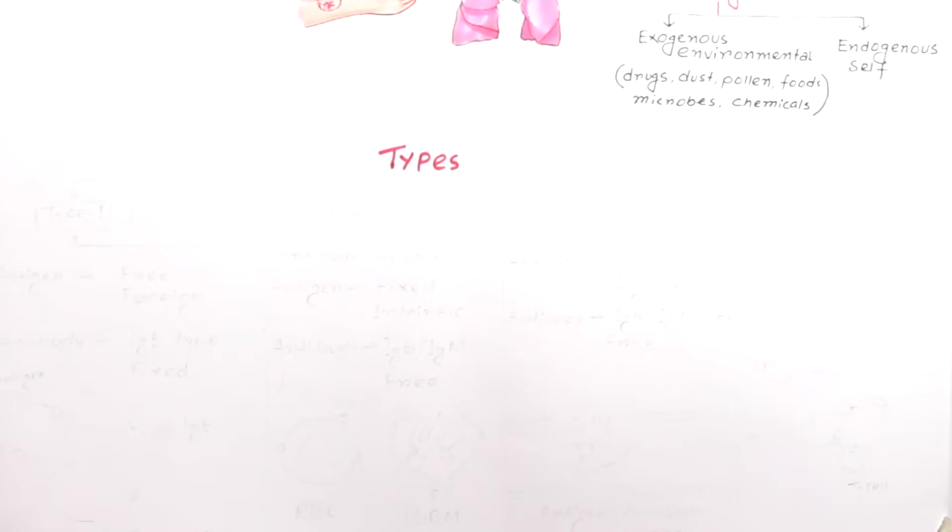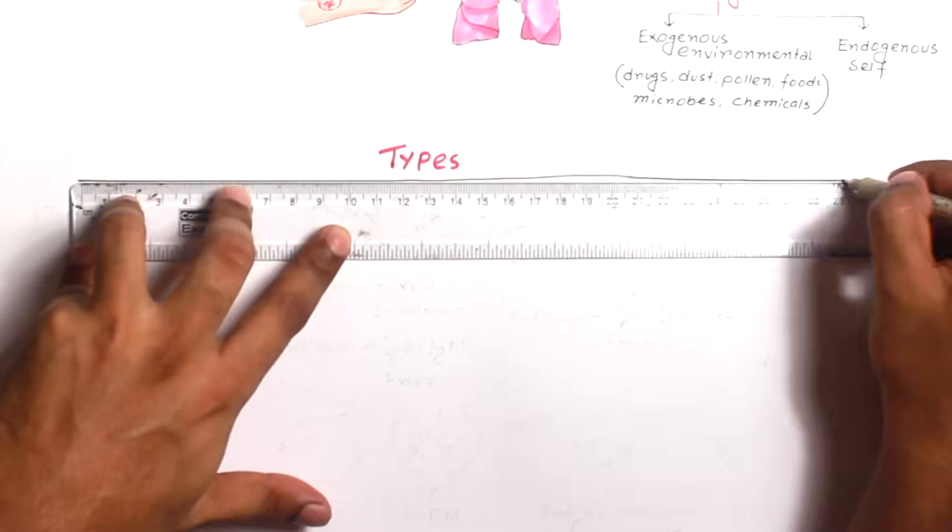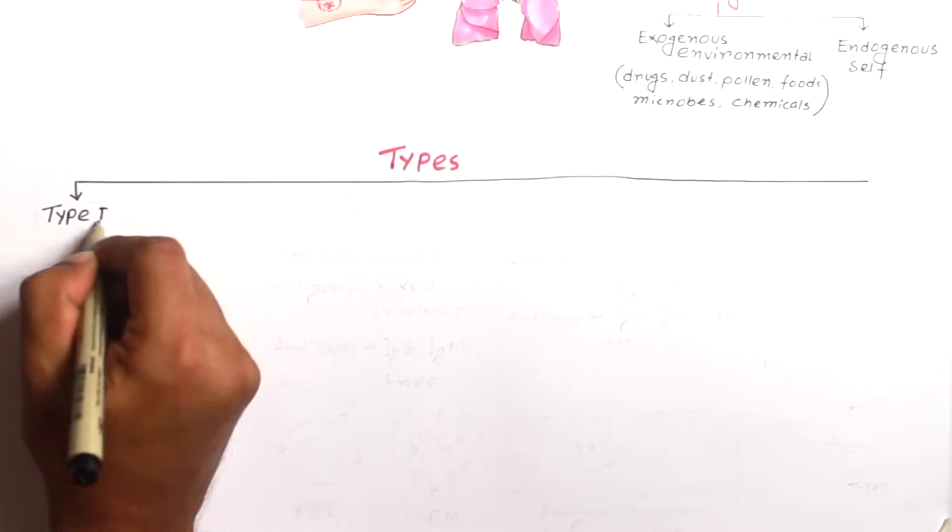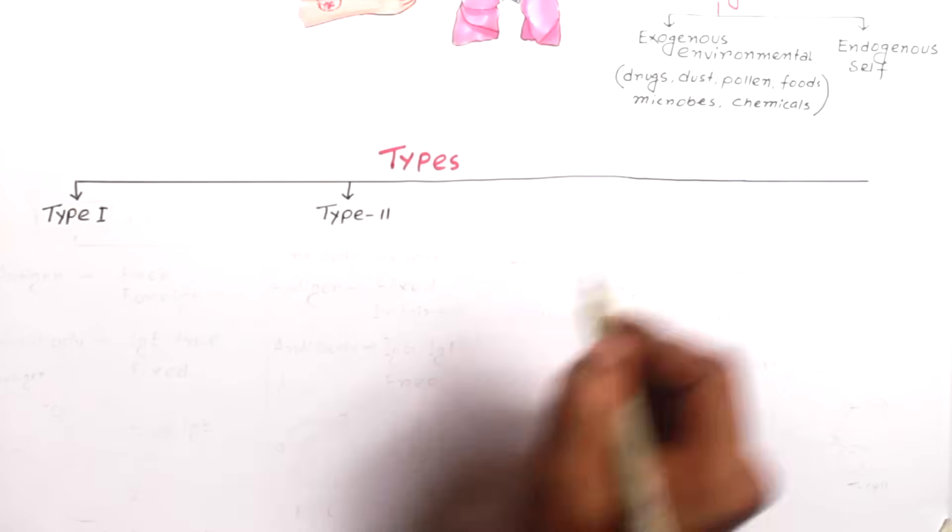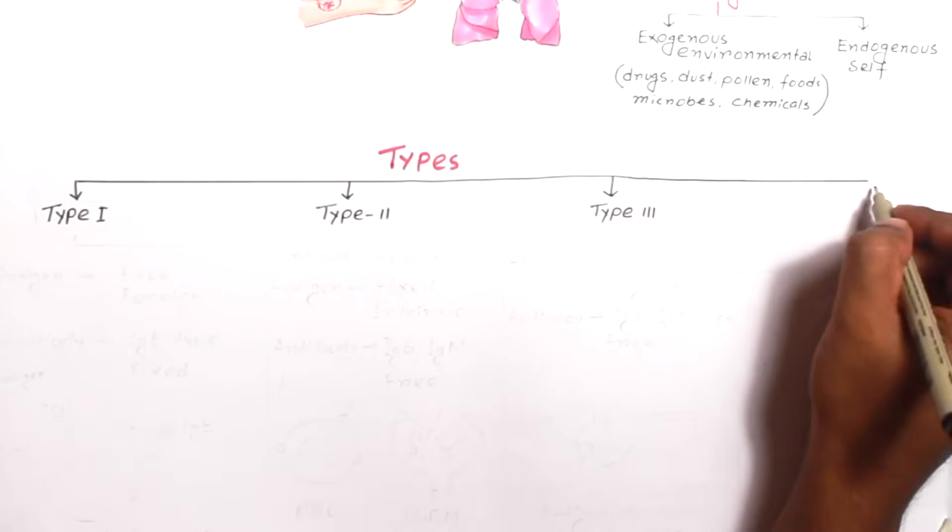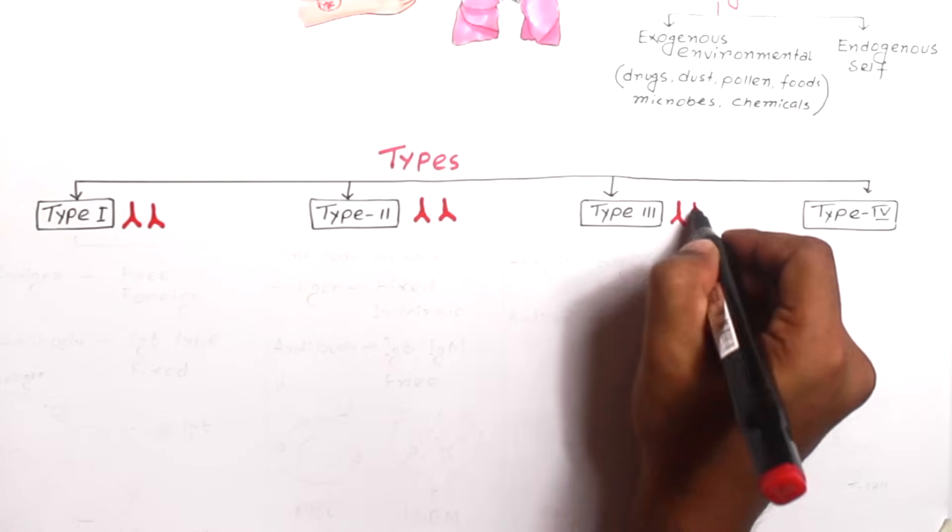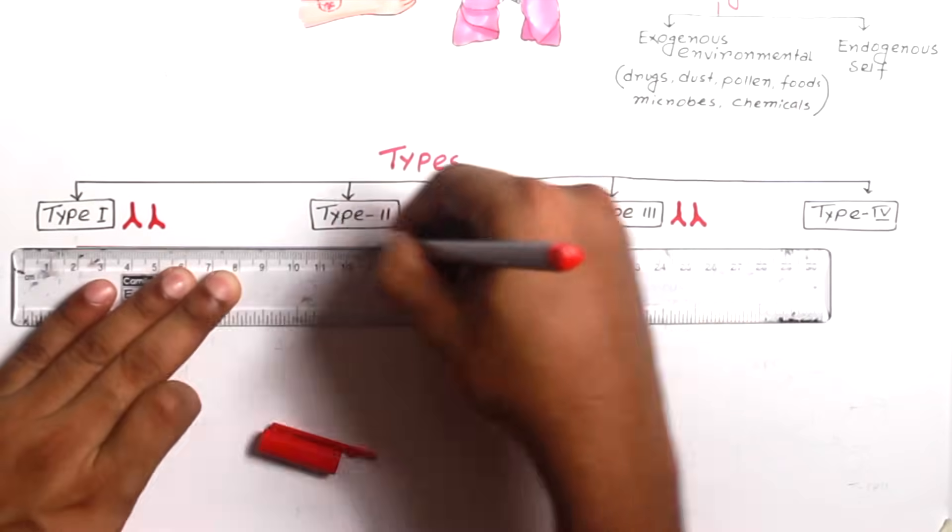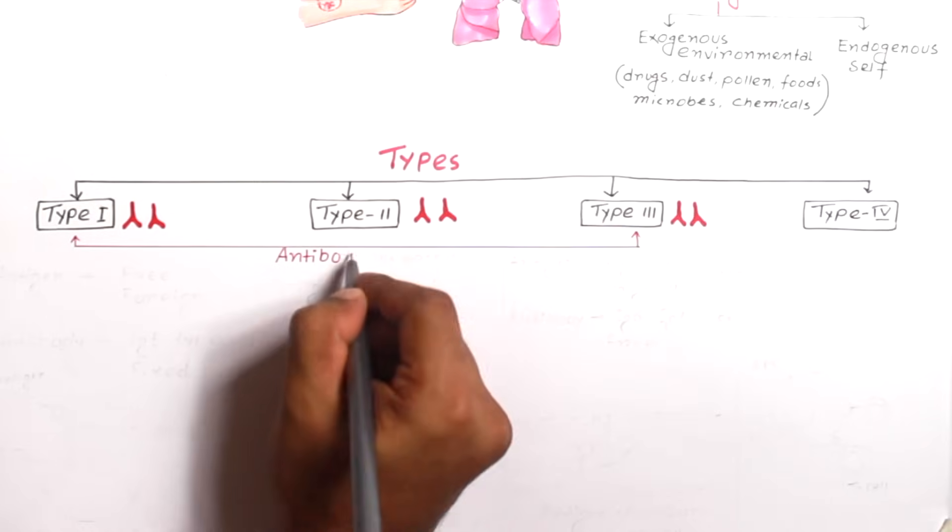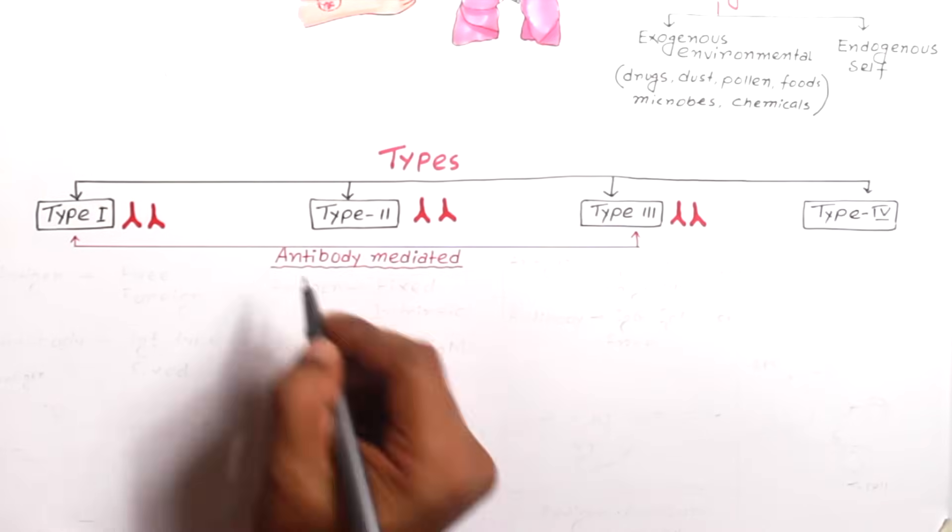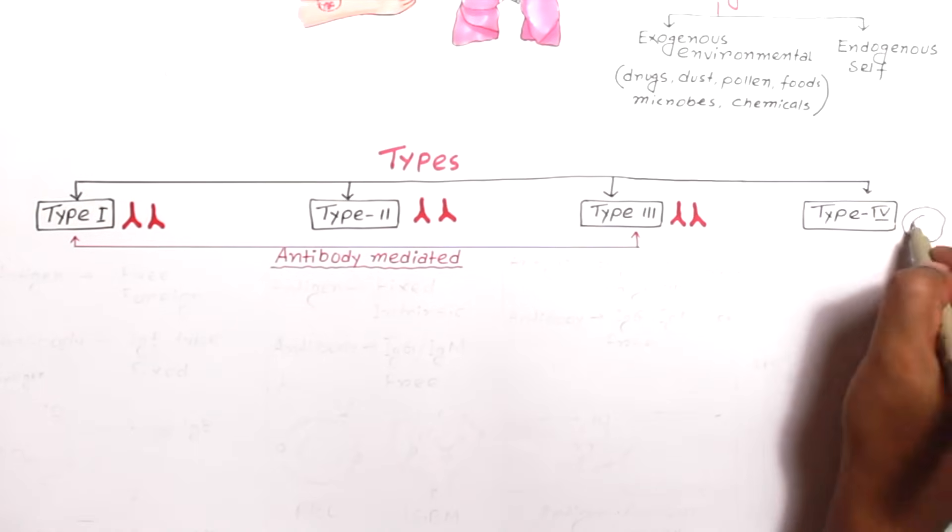Now types. Hypersensitivity reactions are classified into four types: Type 1, Type 2, Type 3, and Type 4. The first three reactions involve antibody, that's why they are antibody mediated. But Type 4 doesn't involve antibodies. It depends only on the cells, that's why it is called cell mediated hypersensitivity reactions.